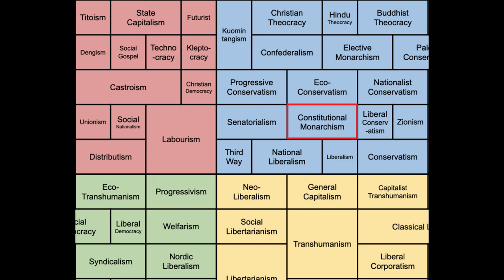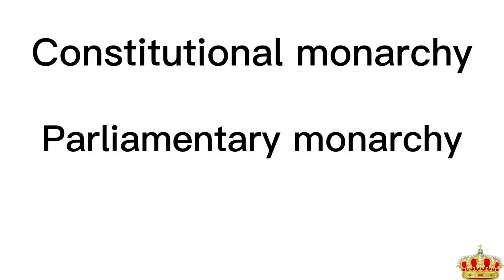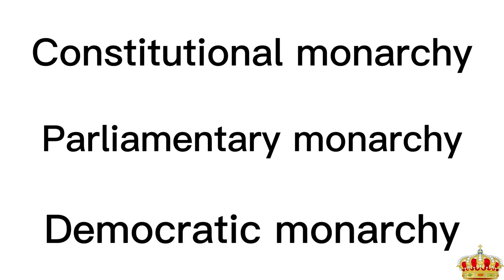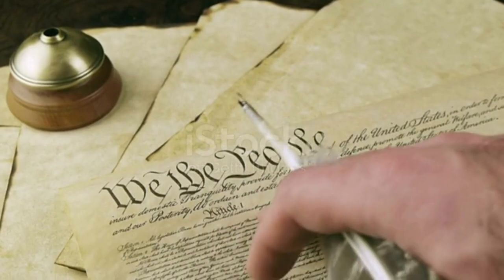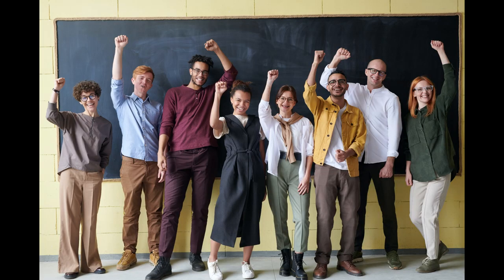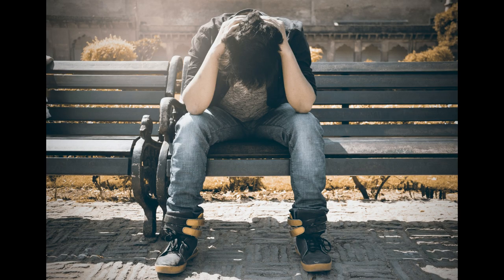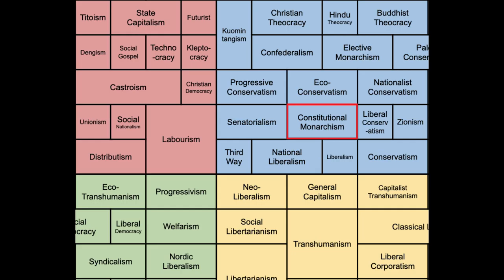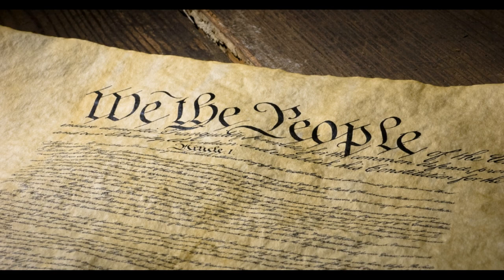What is a constitutional monarchy? A constitutional monarchy, parliamentary monarchy, or democratic monarchy is a form of monarchy in which the monarch exercises their authority in accordance with a constitution and is not alone in decision-making. Constitutional monarchies differ from absolute monarchies, in which a monarch is the only decision-maker. Constitutional monarchy may refer to a system in which the monarch acts as a non-party political head of state under a constitution.